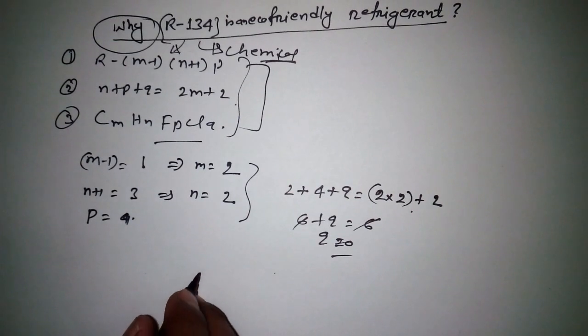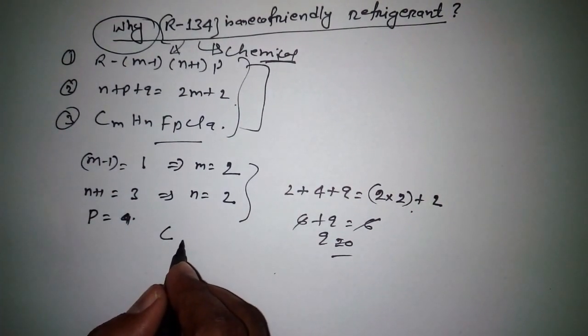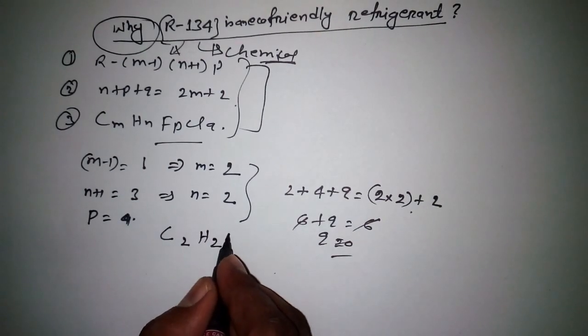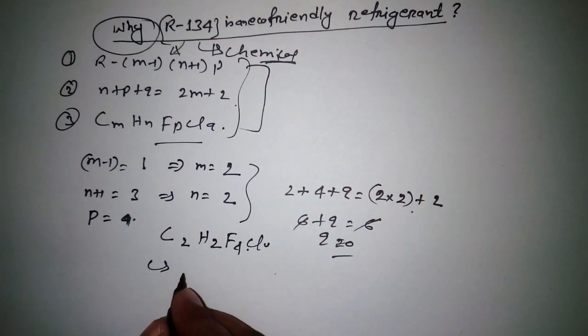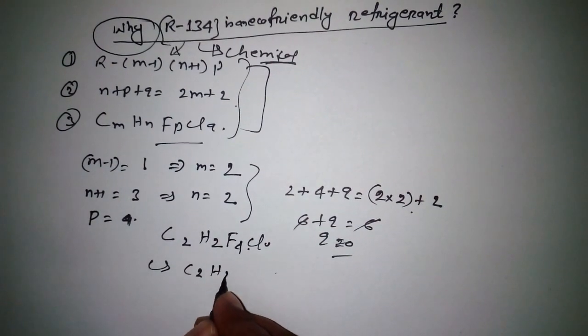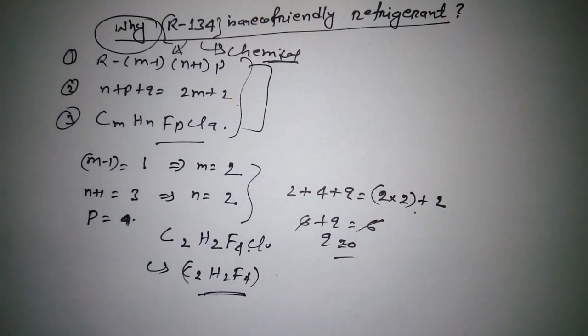So if I put all values here in this equation, what I got: C2H2F4Cl0. By simplifying we can write C2H2F4.